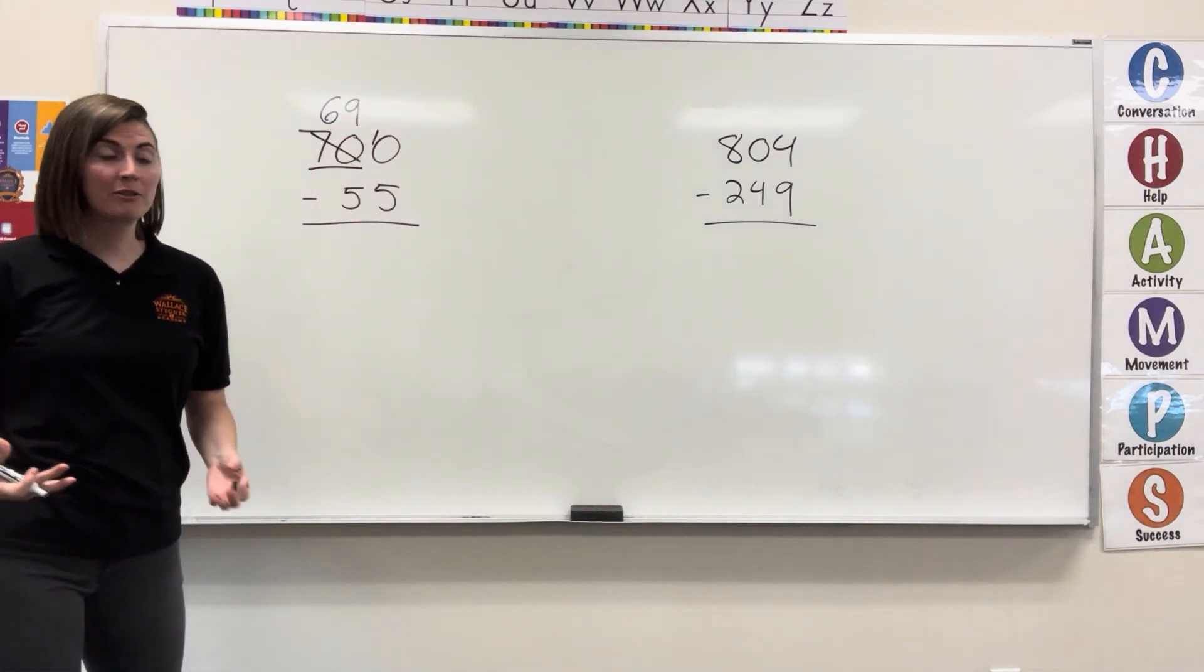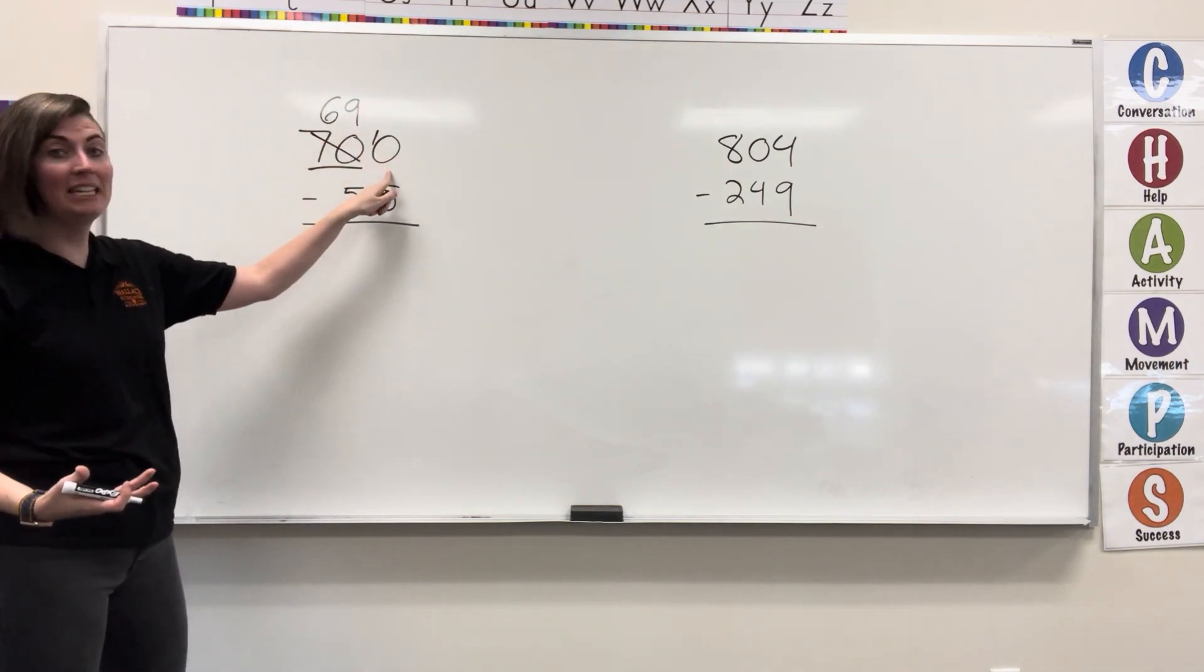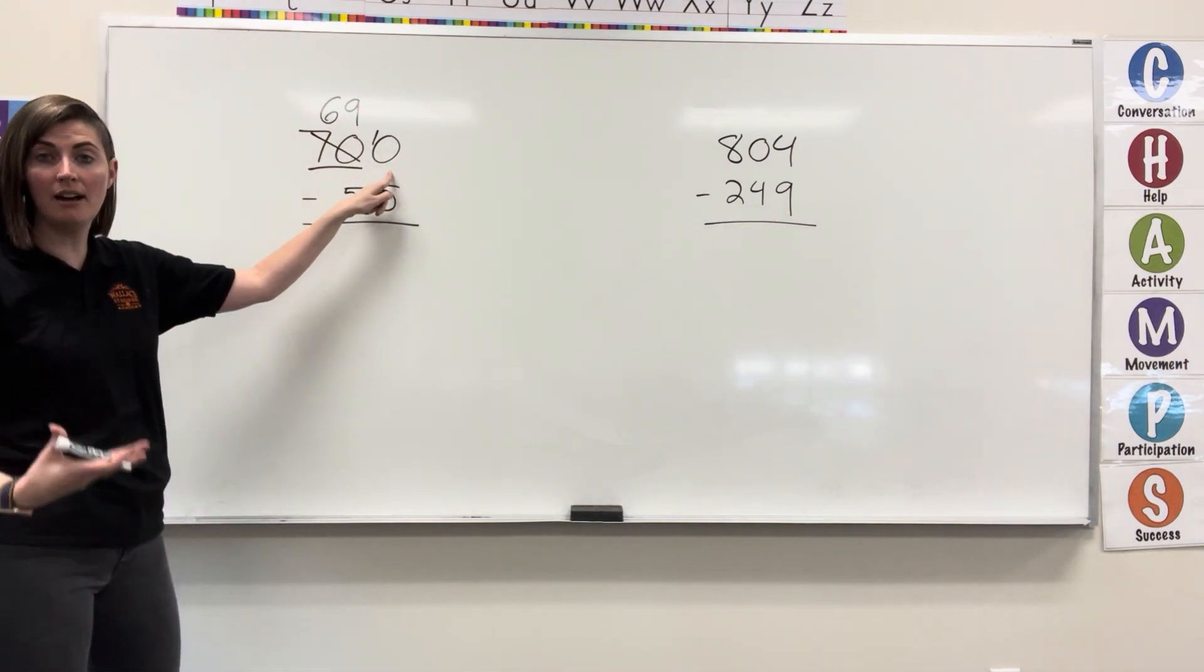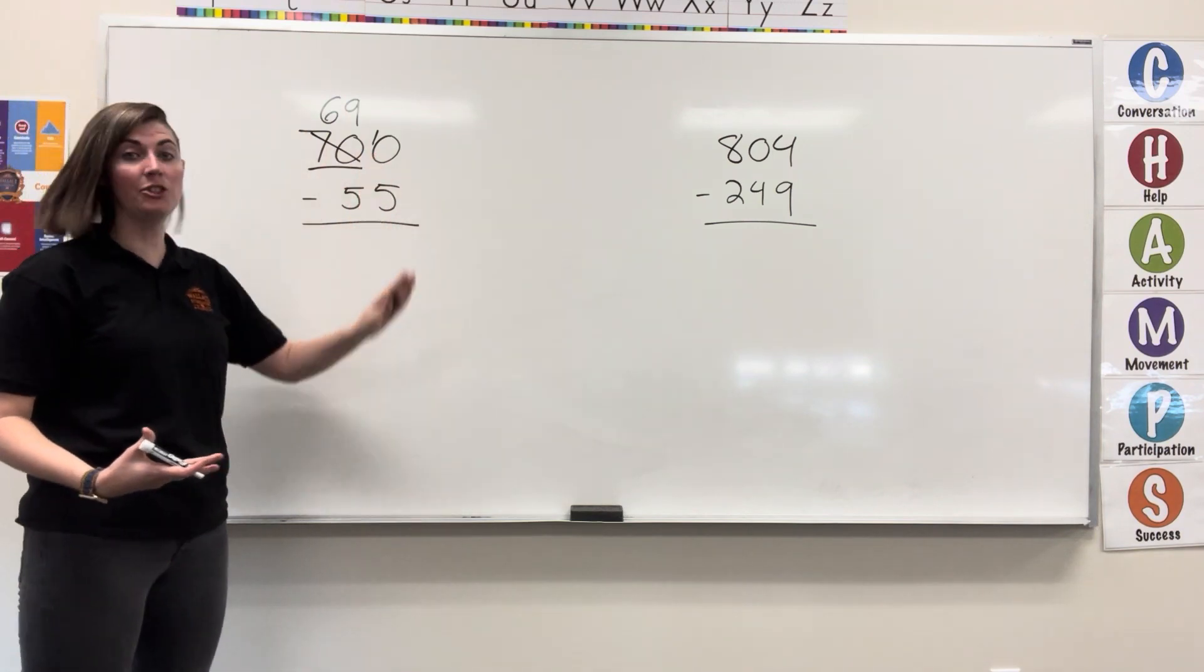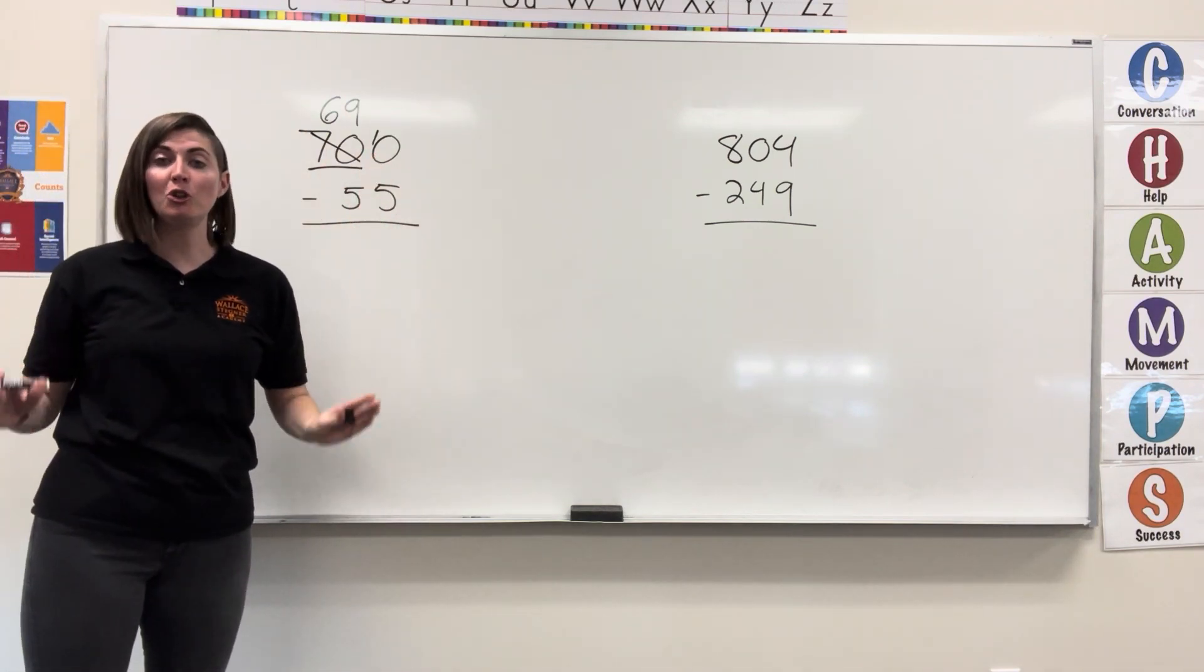After borrowing from that group, I have to make sure I'm giving it to a column. If there's nothing to give to, your group is too big.